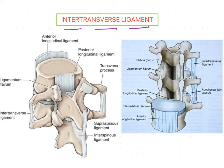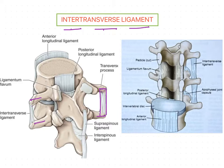The name itself indicates that it is the ligament present in between the transverse processes of the two adjacent vertebrae. So these are the transverse processes of the two adjacent vertebrae, and the fibers are attaching the tips of the transverse processes of the superior adjacent vertebra with that of the inferior adjacent vertebra. This is the inter-transverse ligament.